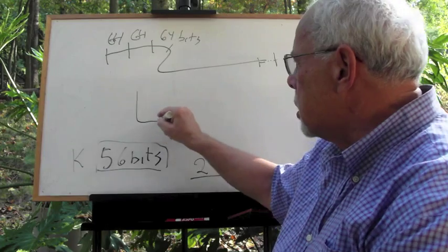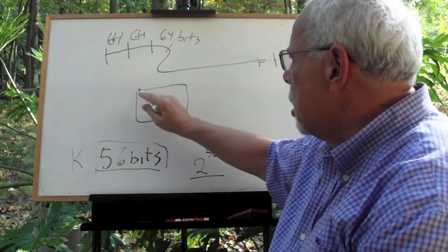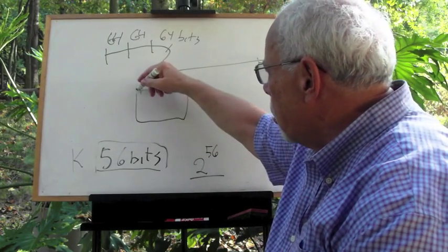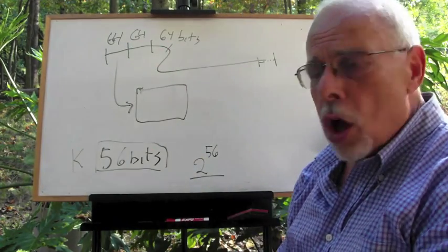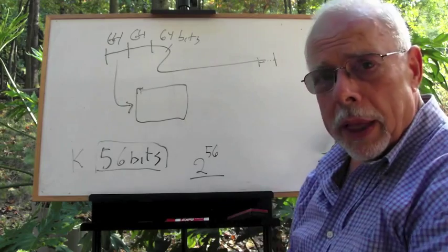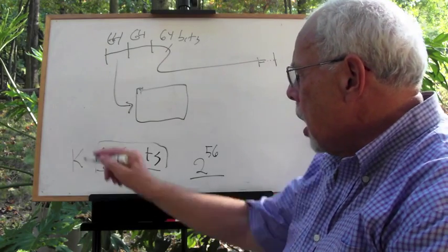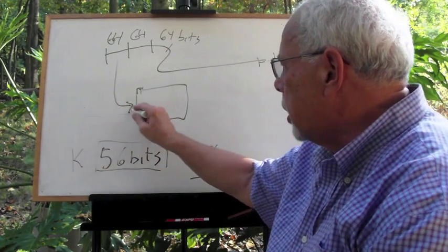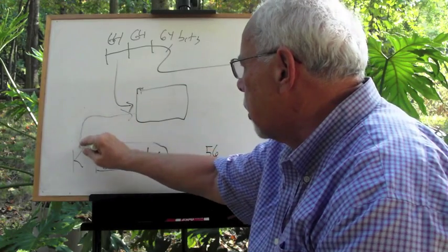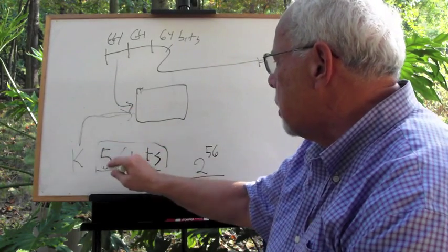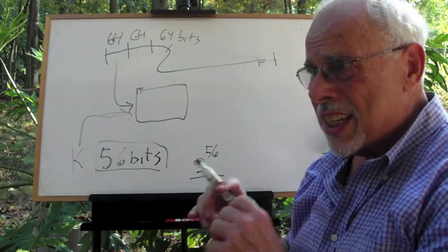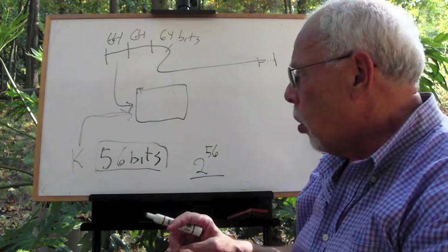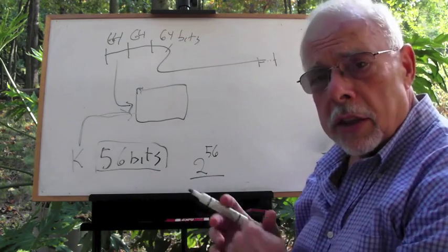This is a box into which we input a block of 64 bits from the plaintext. We input the key, which is 56 bits, which is our secret selection. Only us and the intended reader know it.